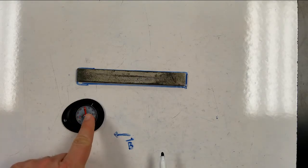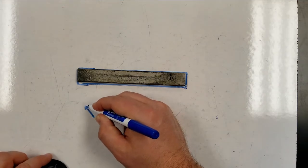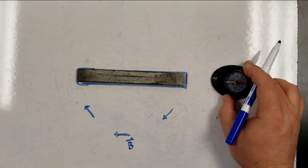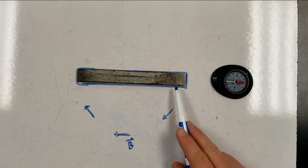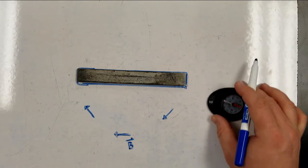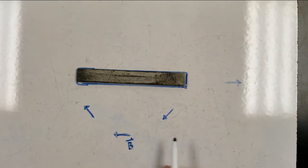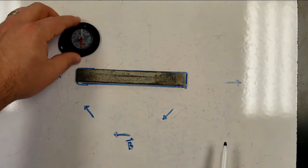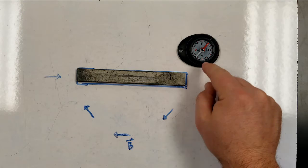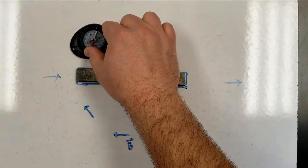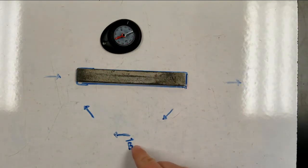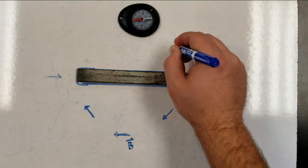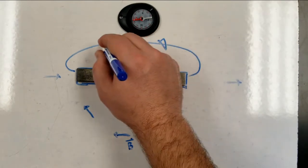Moving my compass over here, notice that it points more up and to the left. Moving it over there, notice it points down and to the left. Moving it over here, notice that it points directly away from this end of the magnet — this end is the north pole. At the position across from the south pole, it points directly toward it. Moving from the north pole over to the south pole, I get a loop shape going from one end to the other. So instead of drawing individual vectors, we draw a loop with arrows indicating the direction.